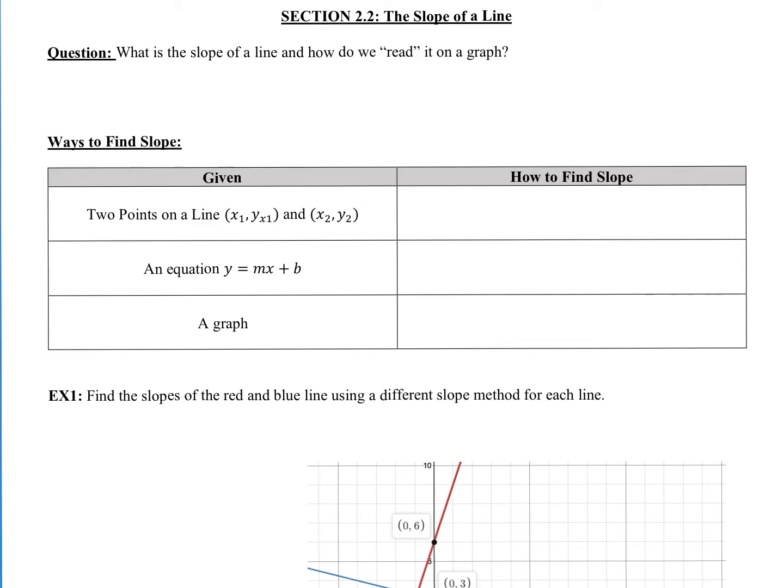Welcome to section 2.2, the slope of a line. The first question is: what is the slope of a line and how do we read it on the graph? This is a very generic definition — if you want the real one, read your book. The slope of a line is basically the way it tilts or changes as we look at our graph.